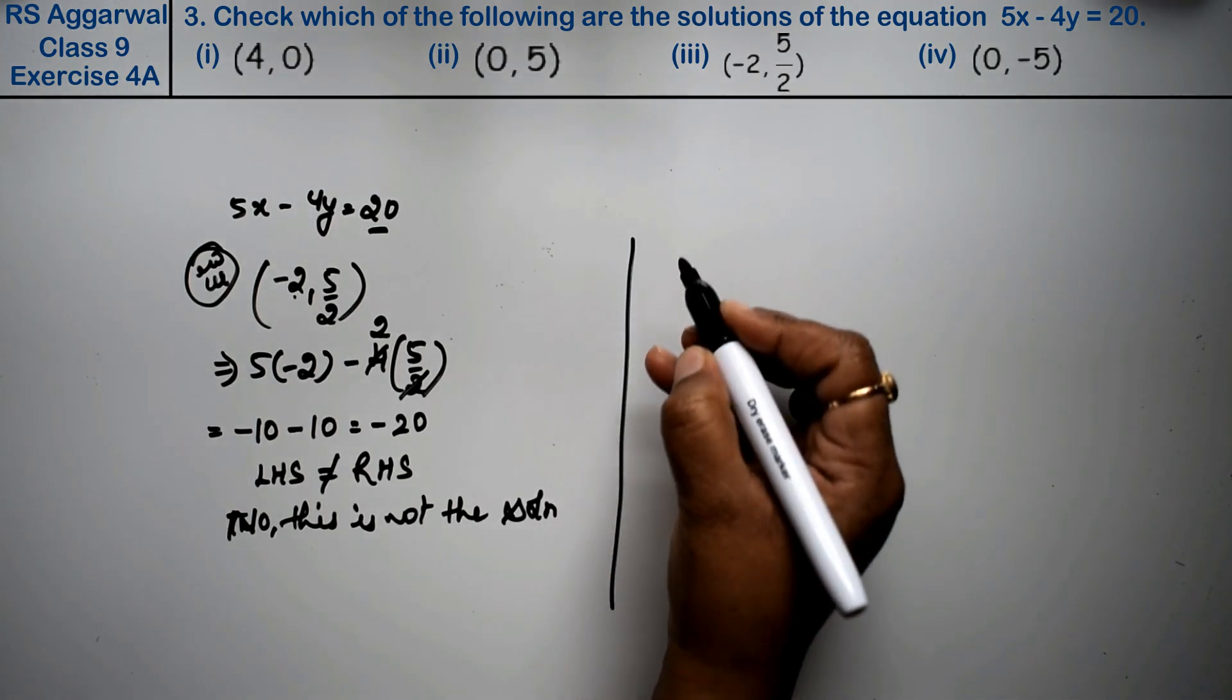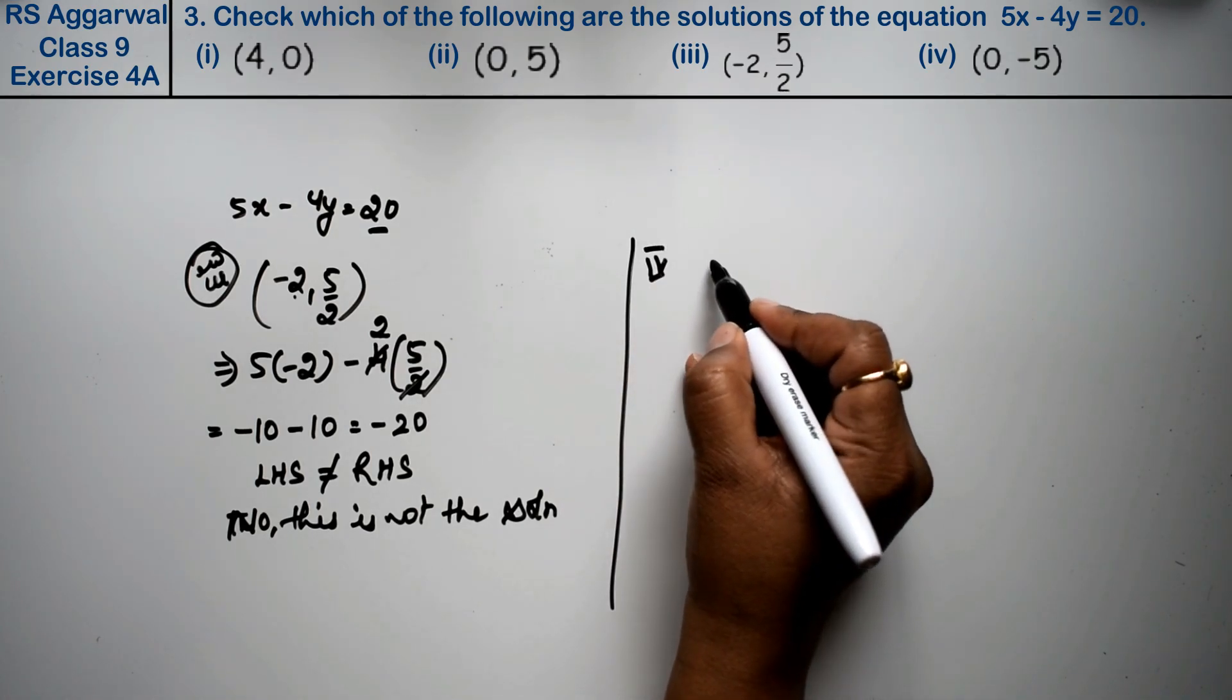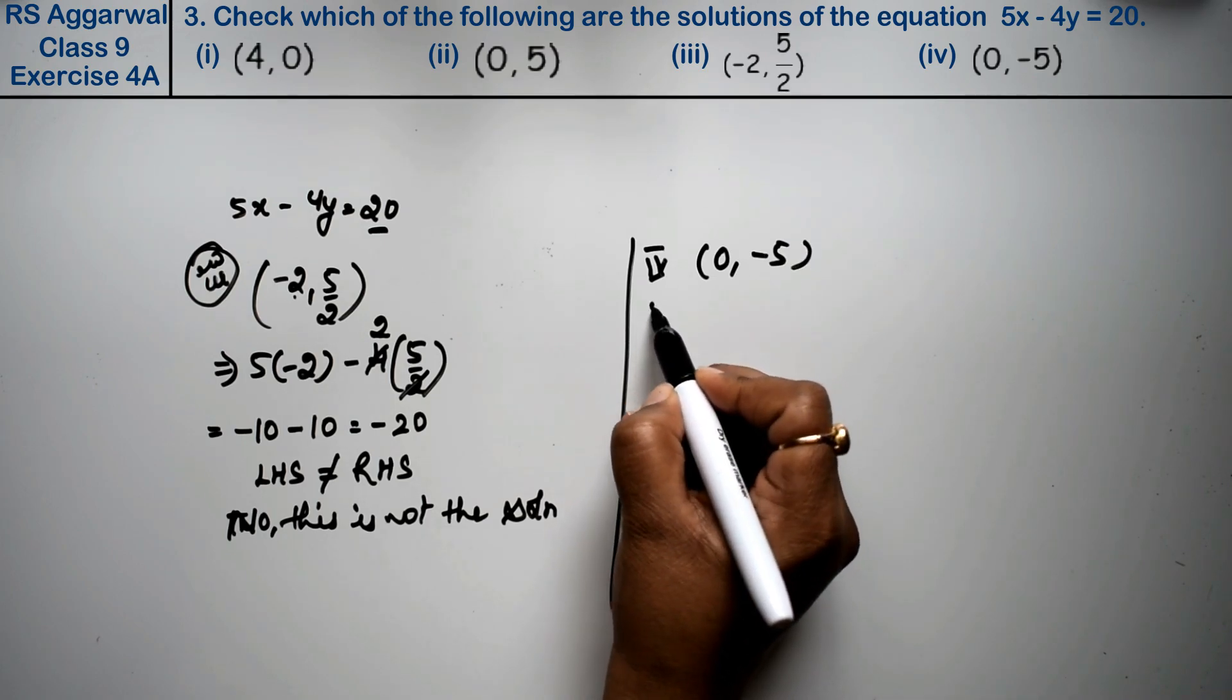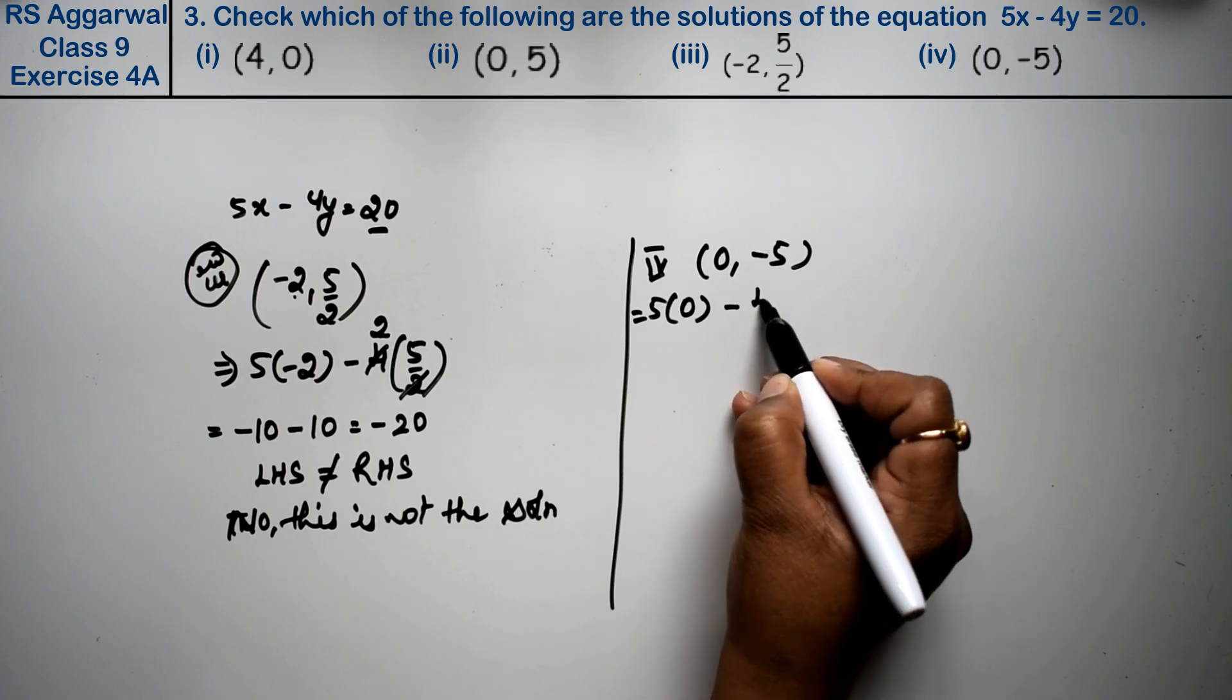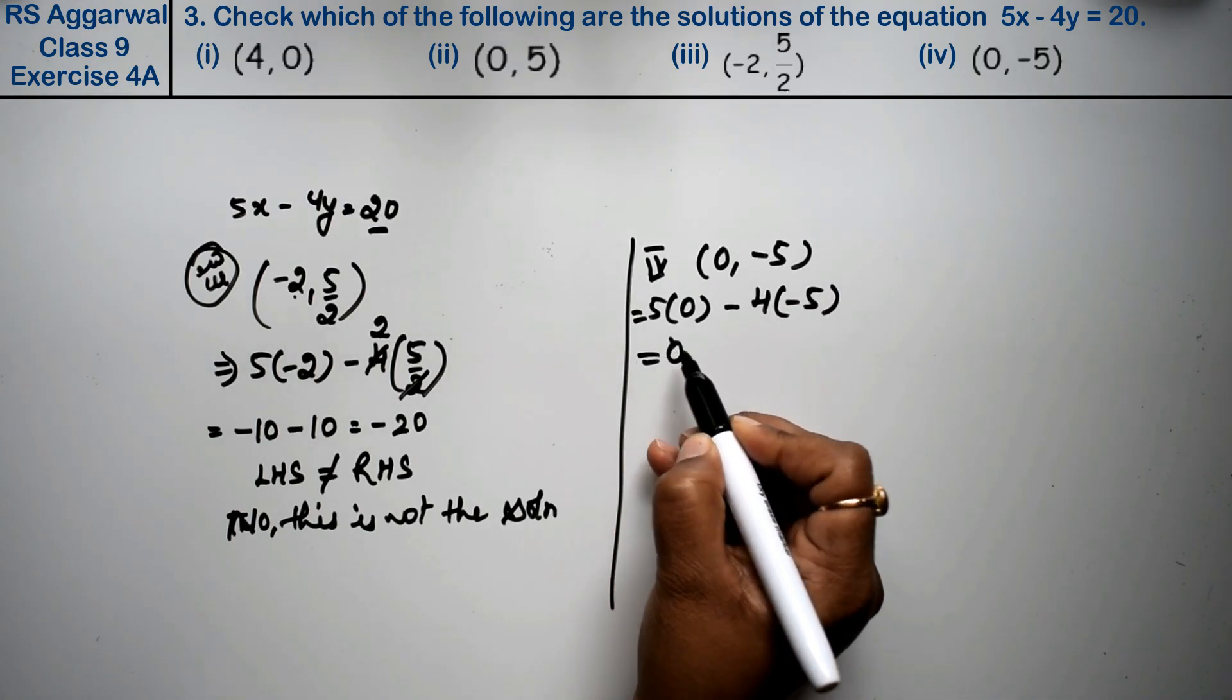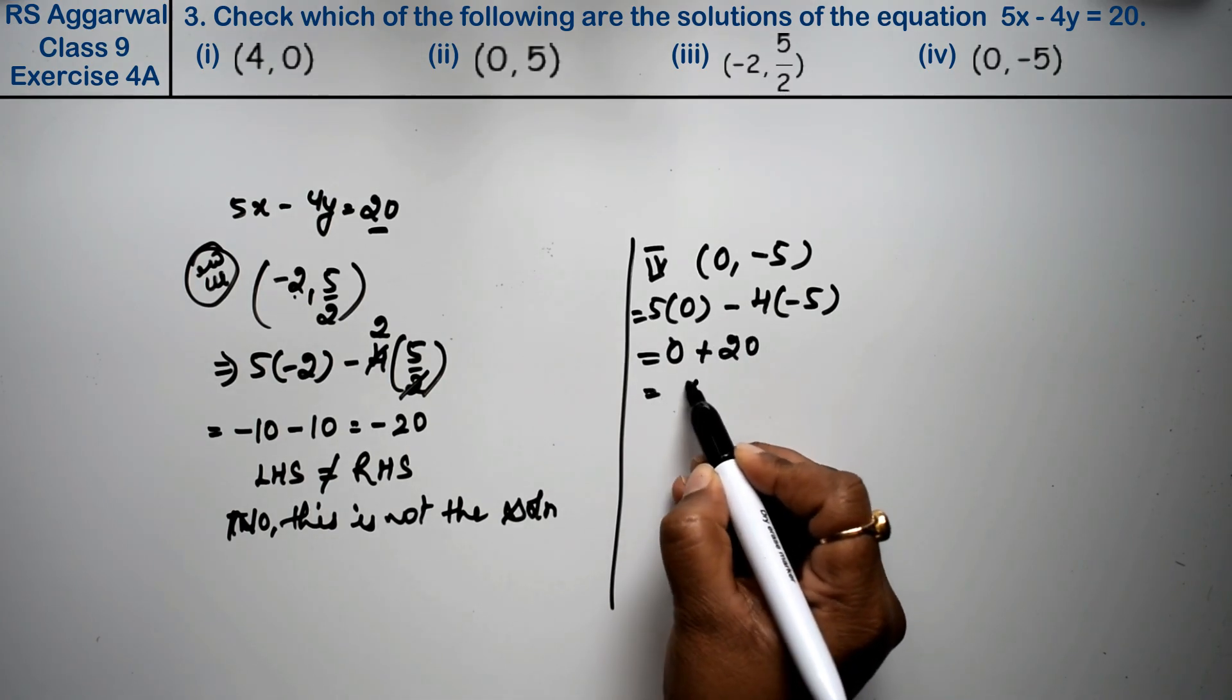Let's do fourth part. Fourth part is 0 and minus 5. So let's see. 5 into 0 minus 4 into minus 5. So how much is it? 0 minus minus plus 20, that means 20.